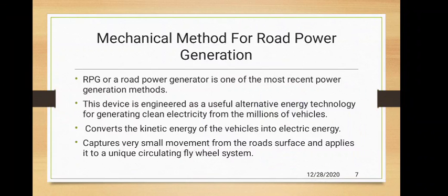The second method of generating electricity from roads is by using vibrations, giving us mechanical road power generation. A Road Power Generator, or RPG, is a device engineered as a useful alternative energy technology for generating clean energy from millions of vehicles. It converts the kinetic energy of vehicles into electrical energy and captures very small movement from the road surface, applying it to a unique circulating flywheel system.